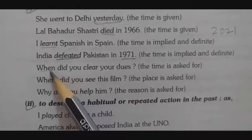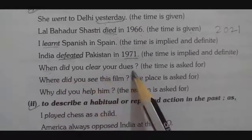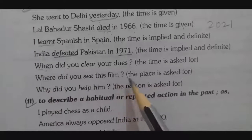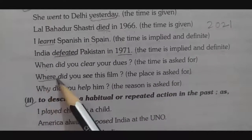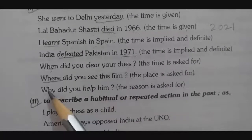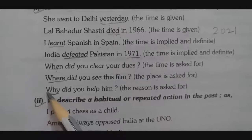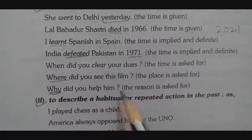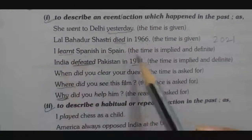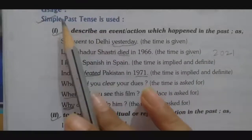Further examples of simple past tense questions: 'When did you clear your dues?' — here the time is being asked. 'Where did you see this film?' — here the place is being asked. 'Why did you help him?' — here the reason is being asked. All these verbs are in simple past tense, describing actions which happened in the past.